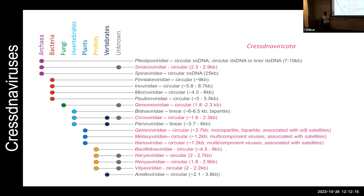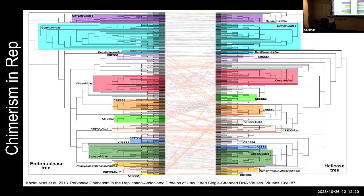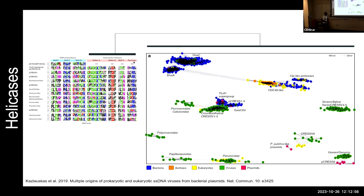If you split the helicase and endonuclease domains — even though they're part of the same protein — the resulting phylogenies are only congruent for certain virus groups and incongruent for others. This incongruence signals recombination that we can't detect at the nucleotide level but can detect phylogenetically at the protein level, because the nucleotide signal has degraded. This tells us these viruses have been recombining and evolving over long timescales.